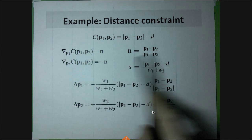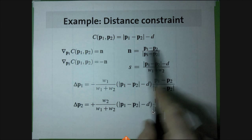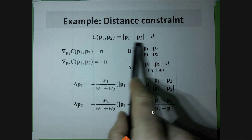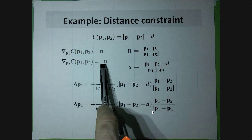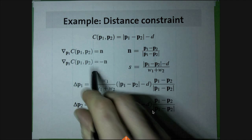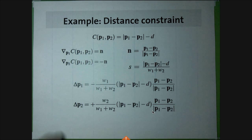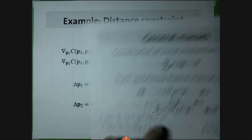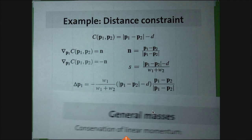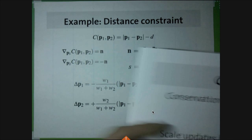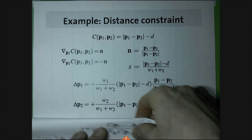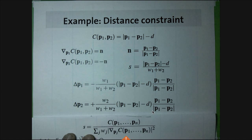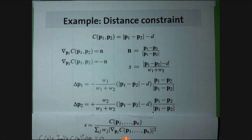With PBD, you can define a proper bending constraint that actually measures the real angle between two triangles. You compute the normal of each triangle via cross products, then compute the angle between the two normals. The rest angle phi_0 is also included — sometimes you simulate non-flat surfaces, like a hat or a can, where the rest pose is already curved.